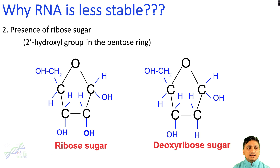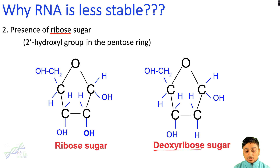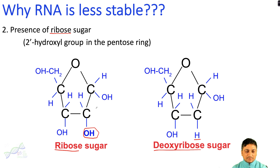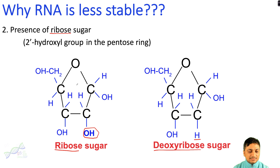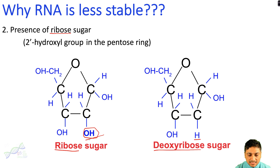The second reason why RNA is less stable compared with DNA is the presence of ribose sugar in RNA, whereas DNA contains deoxyribose sugar. Ribose sugar has one extra hydroxyl group compared with deoxyribose sugar. This extra hydroxyl group on the pentose sugar makes the molecule more susceptible to hydrolysis in the presence of water — meaning the molecule can break down in water. That is why ribose sugar is less stable than deoxyribose sugar, and RNA becomes more susceptible.